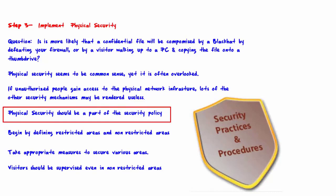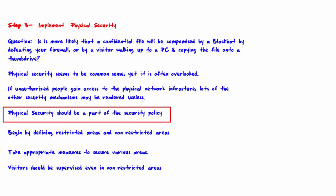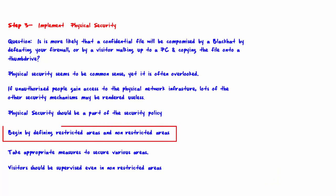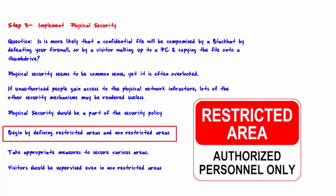Physical security should be made part of your security policy. Begin by defining restricted areas and non-restricted areas. Obviously a server room should be a restricted area. Network equipment such as routers, firewalls, patch panels, and cabling should be in a restricted area. Backup media or any equipment containing data should also be stored in a restricted area.